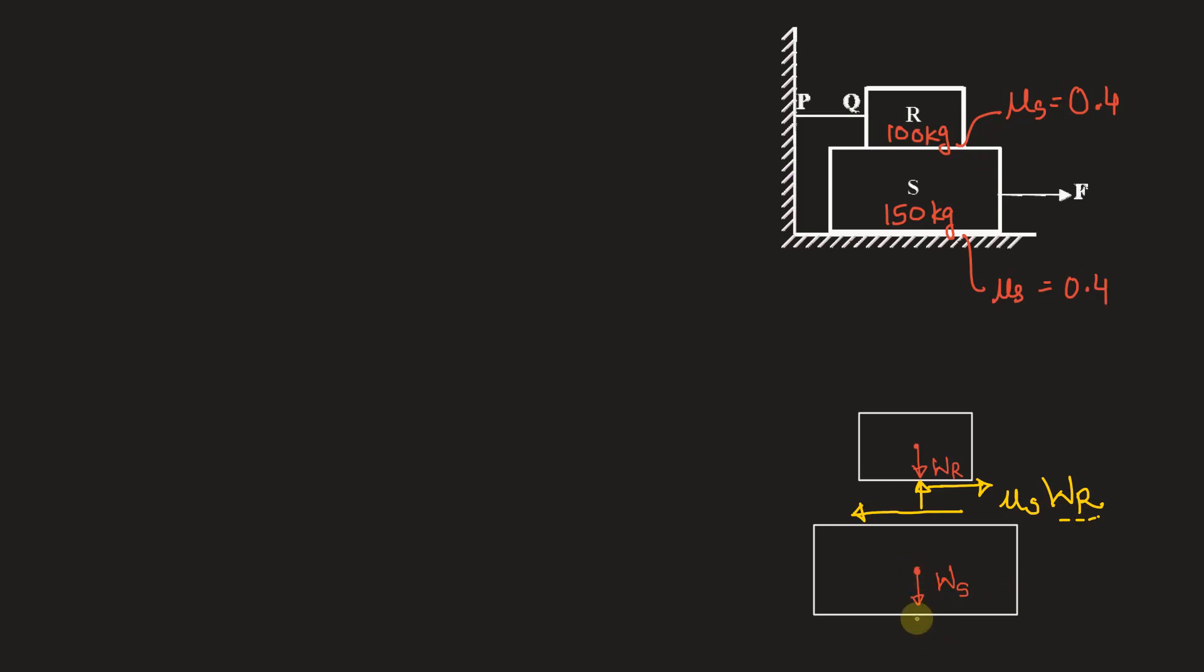Now what about the lower block? The lower block is going to be subjected by friction again in the opposite direction and this friction will be equal to mu S into. Now what's the normal reaction on this bottom block? That will be equal to the weight of both the blocks together. So we have mu S into WR plus WS.